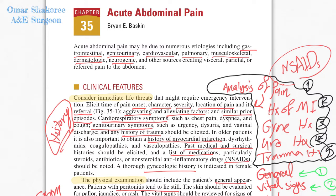If you receive a patient with acute abdominal pain, what to do? First, you have to take some notes about history. The important history here is the analysis of pain, and whether there is a previous history of MI, previous history of trauma, previous history of using non-steroidal anti-inflammatory medication, or urological and gynecological history in female patients.